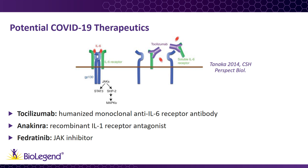A third potential therapy is the JAK inhibitor fedratinib, which is approved for use in patients suffering from myelofibrosis. The JAK pathway is one of several that is activated by IL-6, and blocking it may reduce inflammation by inhibiting the TH17 response described earlier.